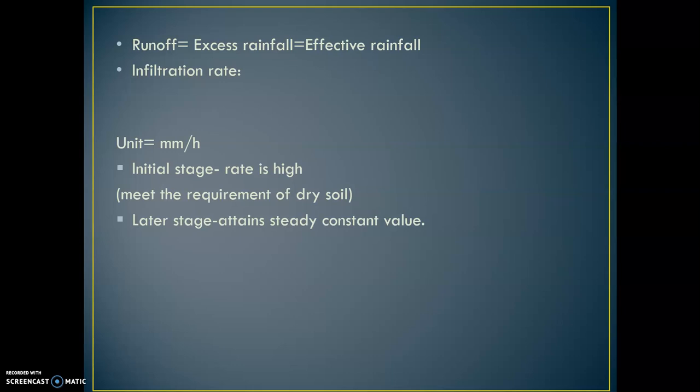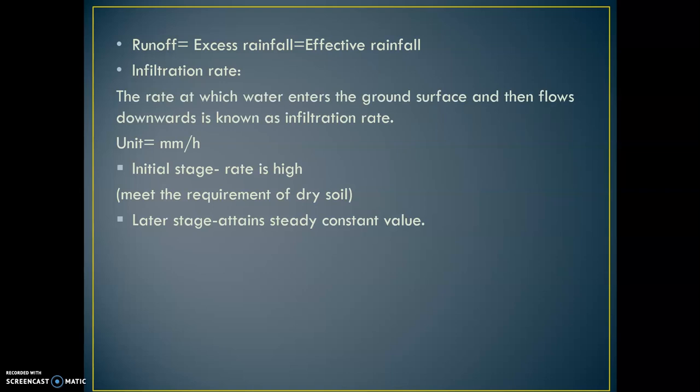Flow over the land is called runoff. Whatever water flows over the land after meeting all losses is called excess rainfall or effective rainfall. Now, what is meant by infiltration rate? The rate at which water enters the ground surface and flows downward is known as the infiltration rate. Its unit is mm per hour — how much mm of water enters the soil per hour. At the initial stage it is very high.